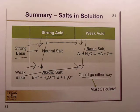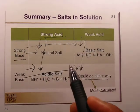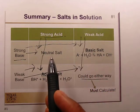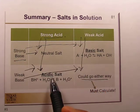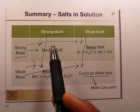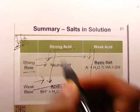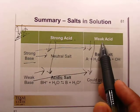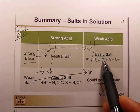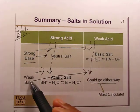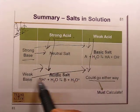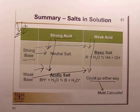As we saw in the previous video about salt solutions — whether a salt is neutral, basic, or acidic — this is a very handy chart to remember. Strong acid plus strong base gives a neutral salt. Weak acid plus strong base gives a basic salt. Weak acid plus weak base requires calculation. Strong acid plus weak base gives an acidic salt.